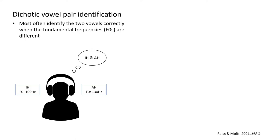When normal hearing listeners are presented with dichotic vowel pairs with different fundamental frequencies, they most often identify the two vowels correctly. For example, when 'a' as in 'hit' with a fundamental frequency of 109 Hz and 'a' as in 'hot' with a fundamental frequency of 130 Hz are presented to opposite ears, listeners can correctly identify both vowels.